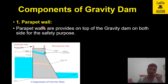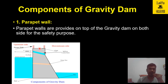The first component of a gravity dam is the parapet wall. Parapet walls are provided on top of the gravity dam on both sides for safety purposes. As you can see in this image, these two walls are called parapet walls, provided for the safety of people moving on top of the dam for maintenance and spillway operation.